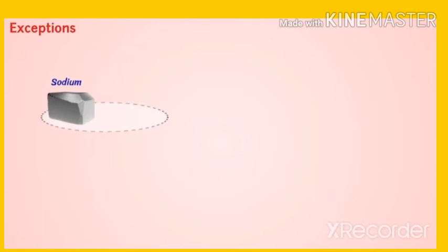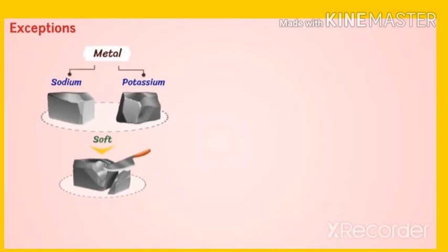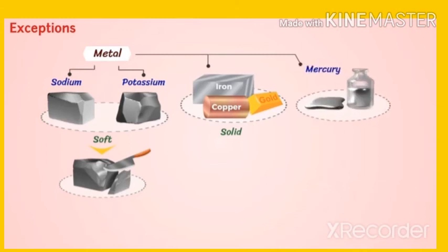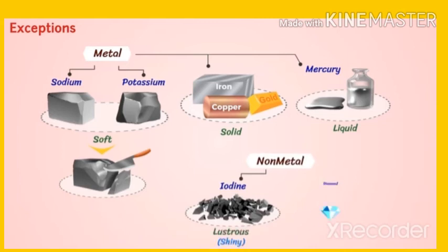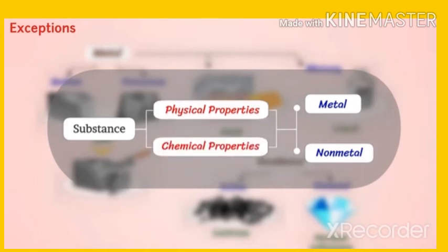Exceptions: Sodium and potassium are soft and can be easily cut with a knife to form a plain surface; however, these belong to metals. All metals are solid except mercury, which exists in liquid form. Iodine is a non-metal but it is lustrous. Diamond is the hardest substance and is a non-metal. This means we cannot classify substances as metals or non-metals based only on their physical properties — we have to study their chemical properties as well.